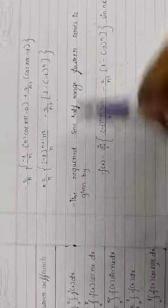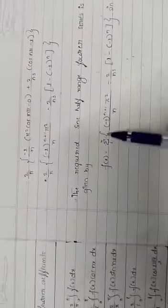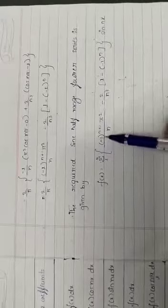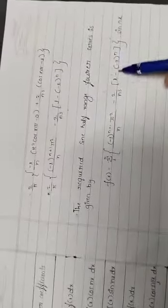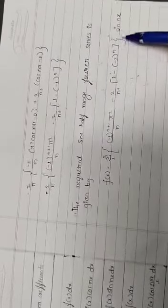Lastly, we get an equation like this. The required sine half range Fourier series is given by f(x) equals the summation from n=1 to infinity of [(-1)^(n+1) × L²/(nπ) - 2L²/(n³π³) × (1-(-1)^n)] sin(nπx/L).